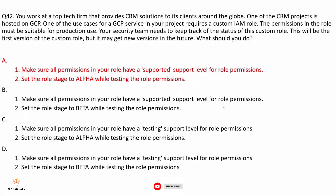Option B: set the role stage to beta while testing. Beta means the role has been tested on a limited basis or includes permissions for services not generally available. Setting the stage to beta while testing does not ensure that all permissions have a supported support level, so this option is not correct.